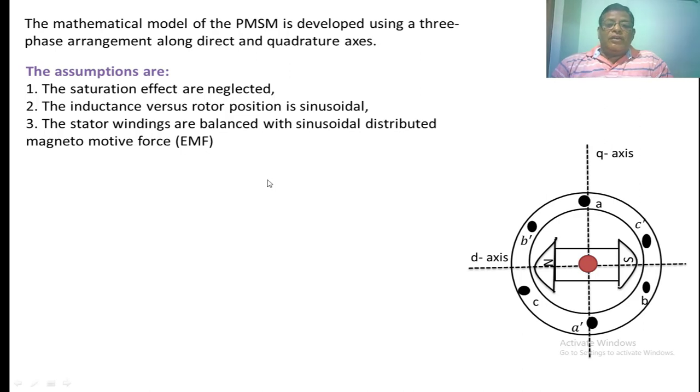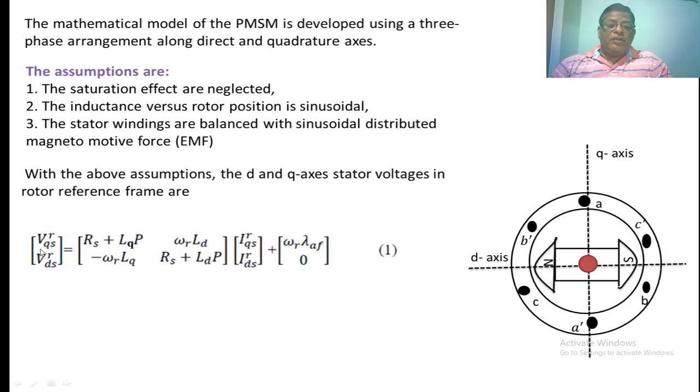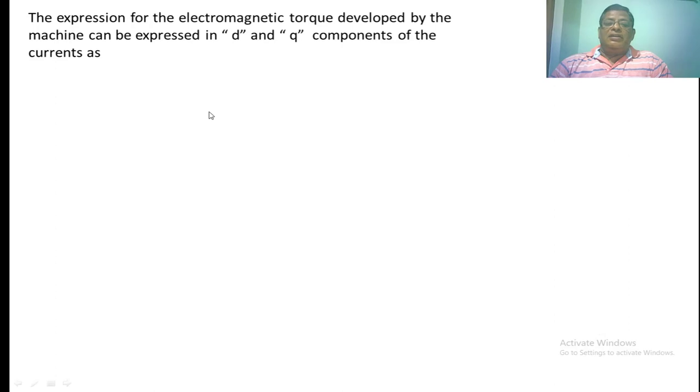Based upon the above assumptions, if we write the stator voltage equation on the rotor reference frame, VQSR VDSR equal to impedance matrix into current matrix into dynamically induced voltage in stator winding. If we express the torque developed in a permanent magnet synchronous motor in DQ components of the currents, then TE equal to 3 by 2 into P by 2 into flux linkage of phase A plus stator inductance into D axis minus stator inductance into Q axis into IDSR into IQSR.